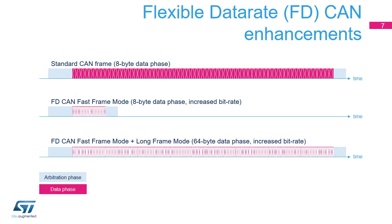There are two variants in the FDCAN protocol. Long frame mode (LFM), where the data field of a CAN frame may be longer than 8 bytes up to 64 bytes. Fast frame mode (FFM), where the control field, data field and CRC field of a CAN frame are transmitted with higher bit rates compared to the beginning and end of the frame. This high data rate is typically 8 Mbps. Fast frame mode can be used in combination with long frame mode.